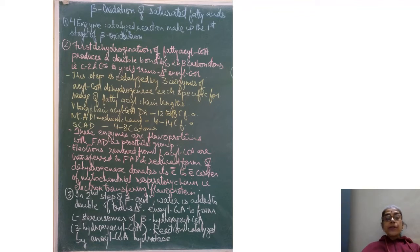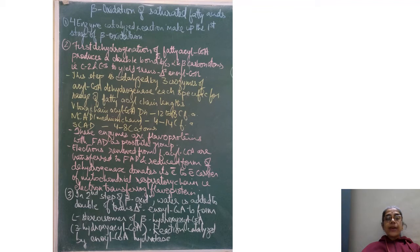In the second step of beta oxidation, water is added to the double bond of trans-delta-2-enoyl-CoA to form the L-stereoisomer of beta-hydroxyacyl-CoA, that is 3-hydroxyacyl-CoA. This reaction is catalyzed by enoyl-CoA hydratase.